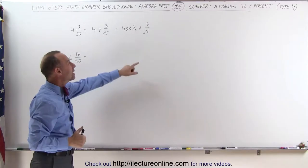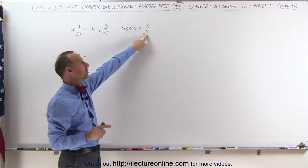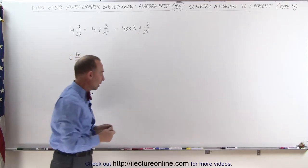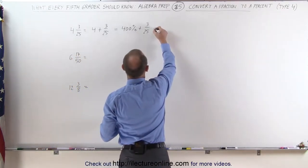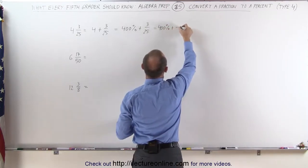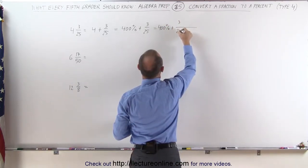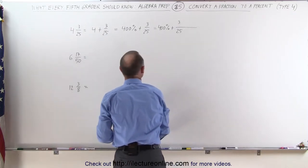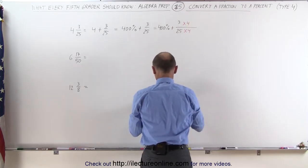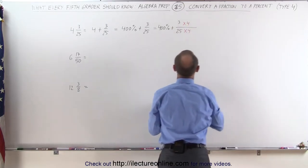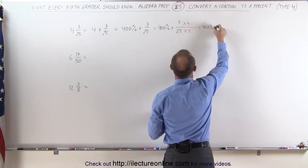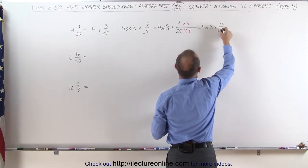We can use a technique where the denominator can be turned into 100 by multiplying it by 4, and we must multiply the numerator times 4 as well. This can then be written as 400% plus the fraction 3/25 turned into the following fraction by multiplying both the denominator times 4 and the numerator times 4. This then becomes 400% plus 12/100.